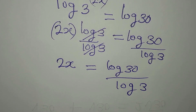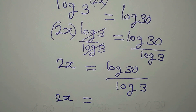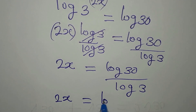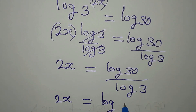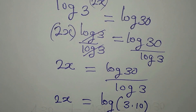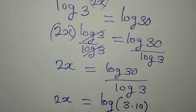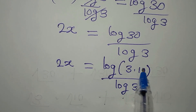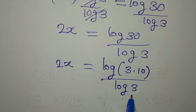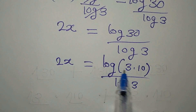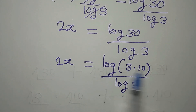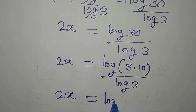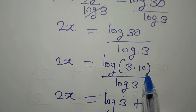From here, we have 2x equals log 30 divided by log 3. We can simplify this: log 30 is log of 3 times 10, and then we divide by log 3. I factored out the 3 from 30 because we have log 3 as the denominator. Applying another law of logarithms to the numerator, 2x equals log 3 plus log 10.